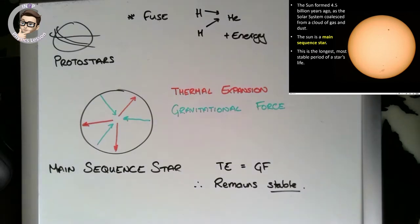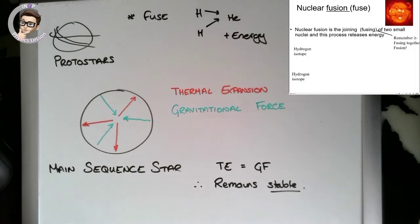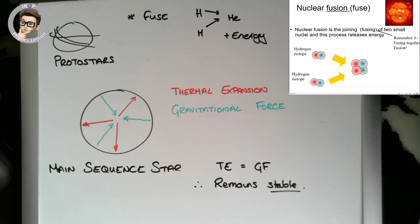Our star is right now a main sequence star and will exist as one for quite some time. It's converting hydrogen to helium through fusion, and beyond that to lithium, beryllium, and so on, building up and up until iron — the largest element it can reach. Fusion is the joining of two small nuclei to release energy, so a hydrogen isotope and a hydrogen isotope come together to give helium plus energy.